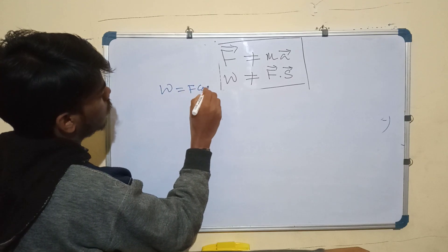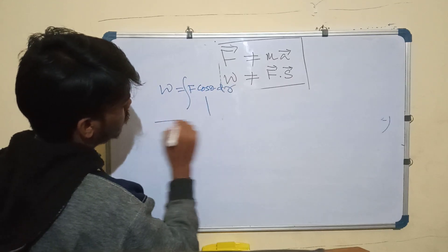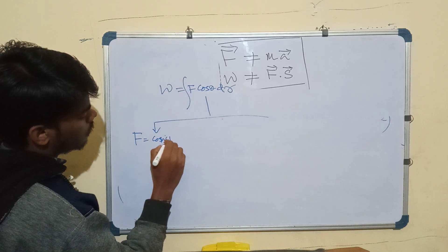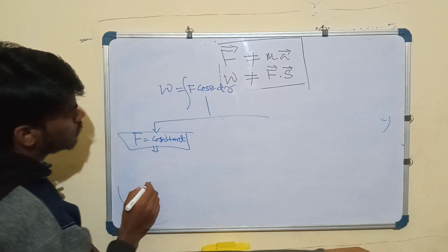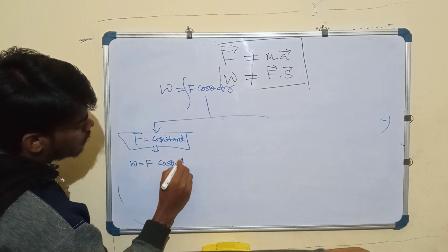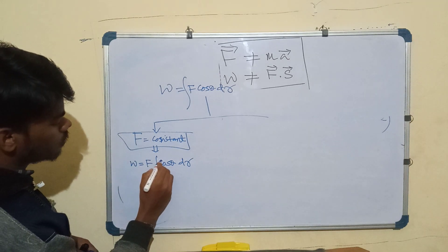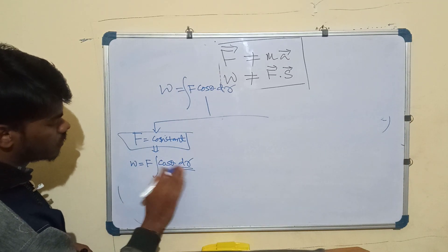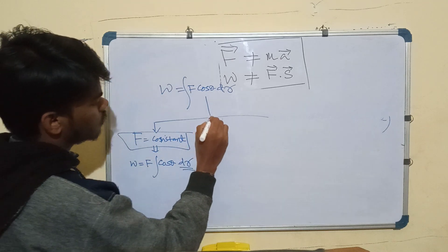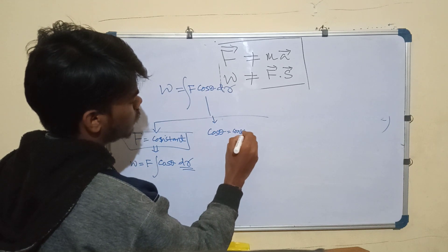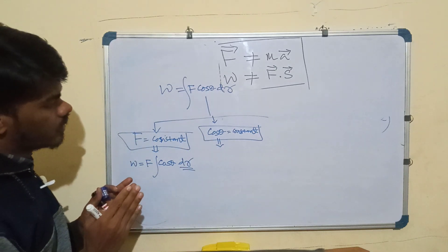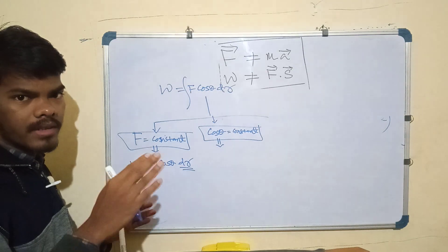So W equals the integral of F cosθ dr, and different cases may arise. When the magnitude of force is constant, we can write W equals F times the integral of cosθ dr — in that case we write dr as a function of θ and integrate, or write cosθ as a function of r and integrate. Another case is when cosθ equals constant, meaning the angle between the force vector and the small displacement is always fixed.